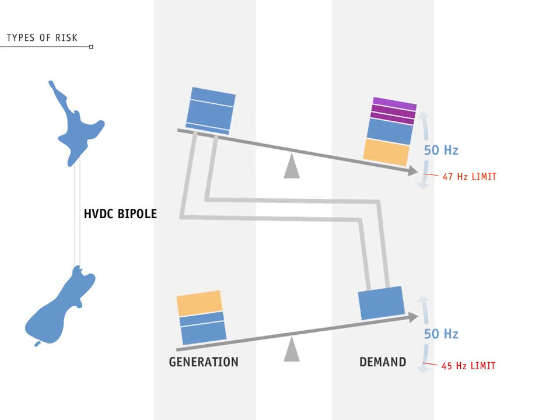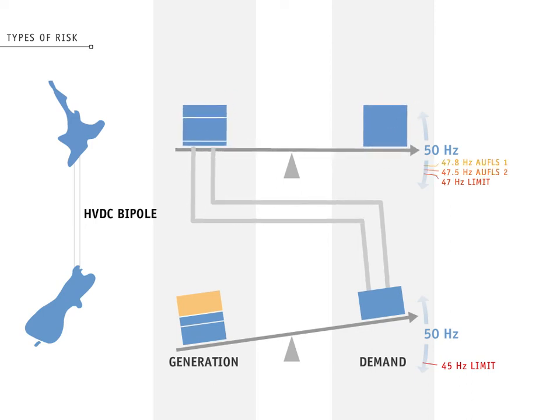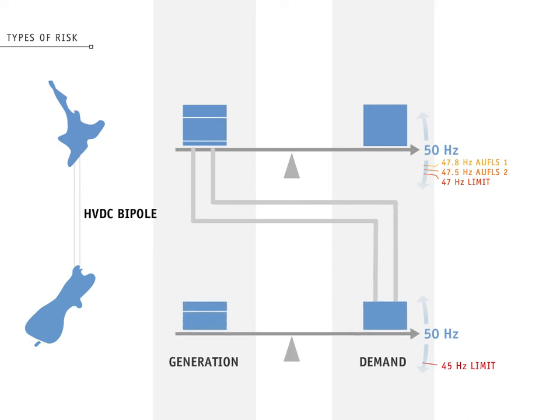We'll look first at what is done to restore the power system in the North. FUR, SIR, and AWFLS are used to balance the North Island. In the South Island, the high frequency due to the excess power produced is corrected by generation plant governor response, and also by over-frequency arming, which is automatic disconnection of some South Island generation.